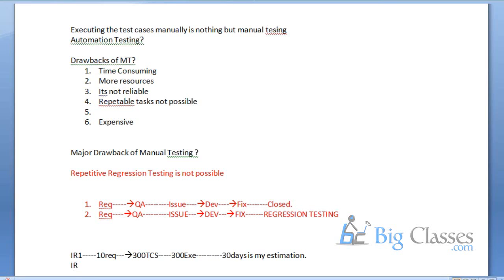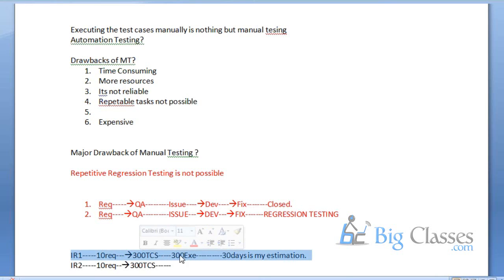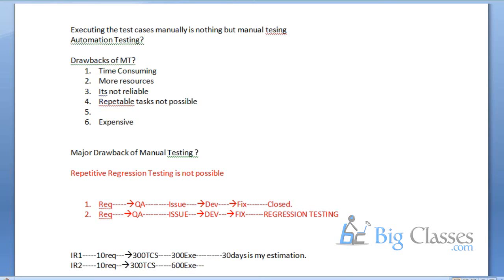Then I get Release 2 with another 10 requirements — for example, compose and send mail — and I develop another 300 test cases. Now for Release 2, I need to execute not just the new 300 test cases but also the previous 300 — totaling 600 test cases. This is because we must go back and check the previous ones for any impact.